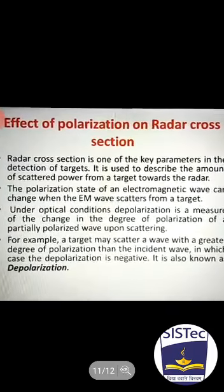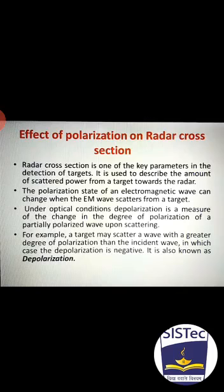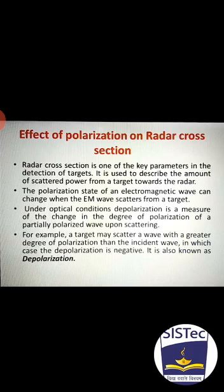Effect of polarization on radar cross-section: radar cross-section is one of the key parameters in the detection of targets. It is used to describe the amount of scattered power from a target toward the radar. The polarization state of an electromagnetic wave can change when the electromagnetic wave is scattered from a target — this is the polarizing effect.